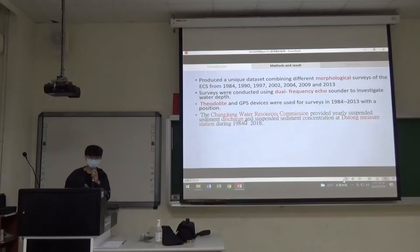Let's go to the method and results. The research produced a unique dataset combining different morphological surveys of the ECS from 1984 to 2013. Morphological means the place we investigated, maybe for one year or two years. We continue investigating the same place for two or three years. We have seven morphological surveys total.